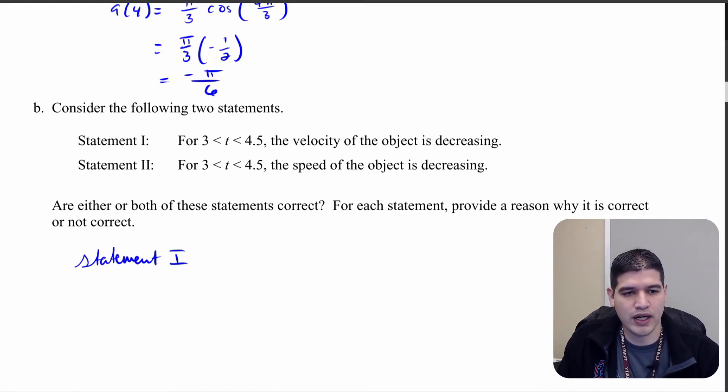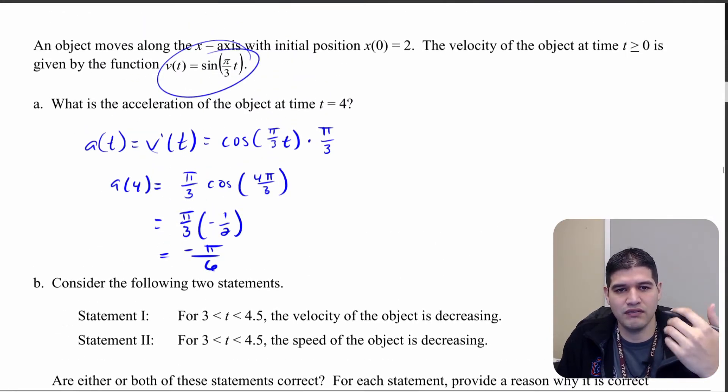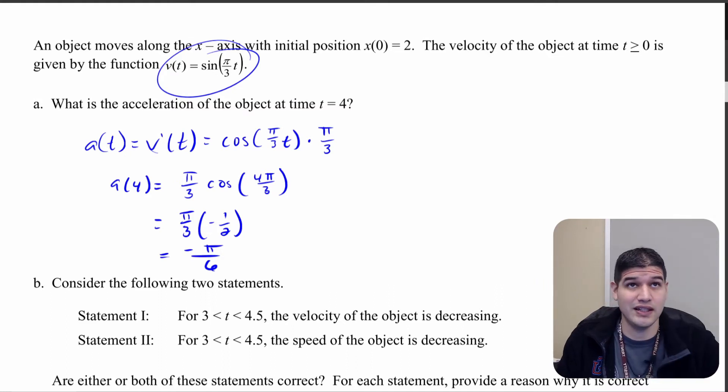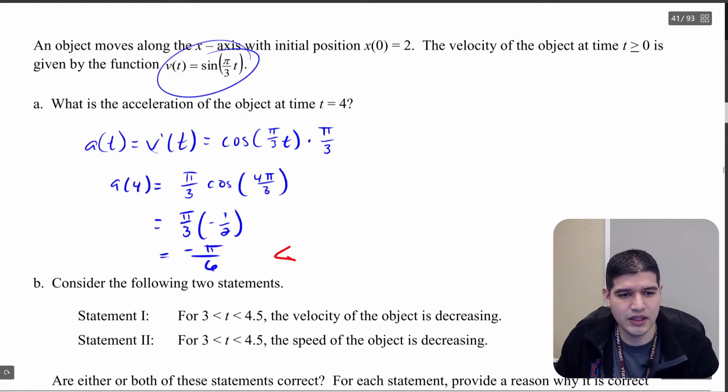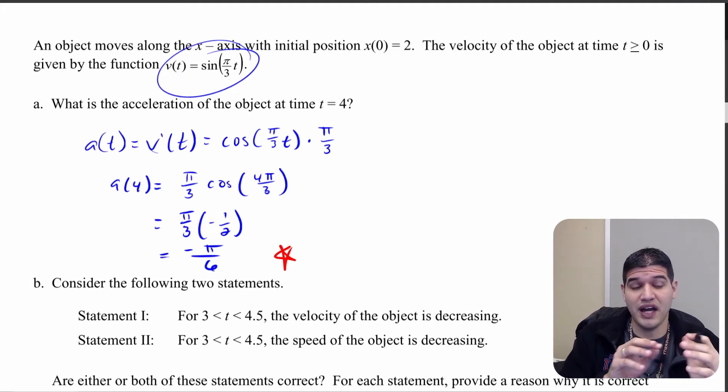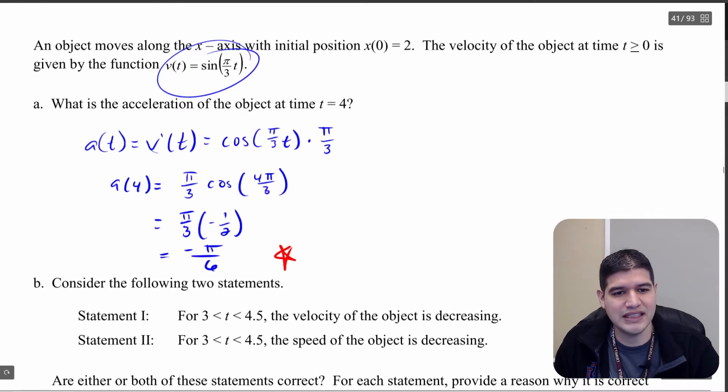So let's take a look at this. Okay, the first question: the velocity of the object is decreasing. Well really all we need to see is within 3 to 4.5, we want to be able to see what does it mean to be decreasing for the velocity. Well, we're given the velocity equation, so in order for velocity to be decreasing, we need acceleration to be negative. Well take a look here: we know the acceleration at 4, which falls within the interval from 3 to 4.5, we know that the acceleration is negative, which means velocity must be decreasing here.